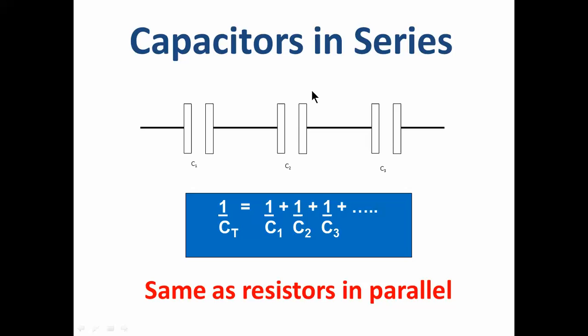You need to be able to calculate the total capacitance for capacitors in series and parallel together. So if we've got two in parallel, we just add them, and then we use that answer to work out the series capacitance with the third one.